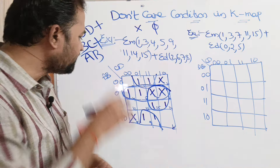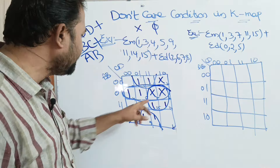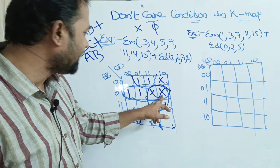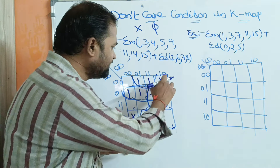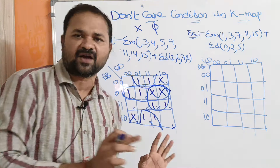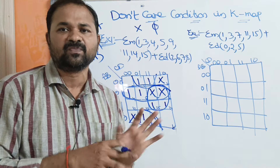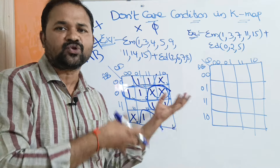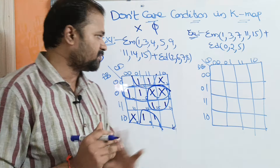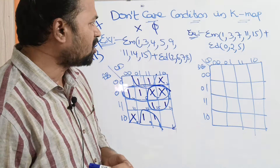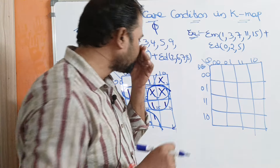Here we actually have 4 don't cares, but we have included only 2 of them. Two cells are not covered, but according to the problem, we may include or we may not include don't cares — there is no problem. Now, let us solve one more problem.